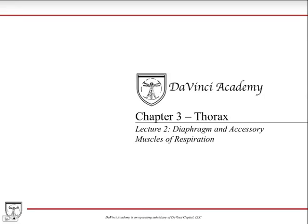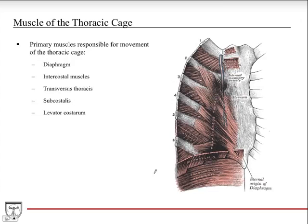This is the second lecture of the thorax chapter. In this lecture, we're going to be talking about the diaphragm and then the accessory muscles of respiration. The primary muscles responsible for movement of the thoracic cage are the diaphragm, the intercostal muscles, and then the transversus thoracis muscle, which is shown here in this diagram.